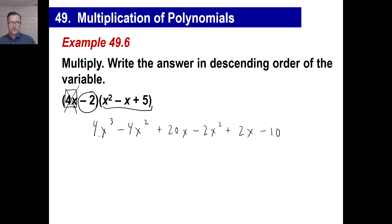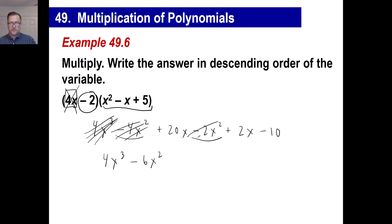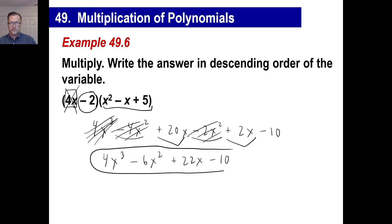Now if you look at this, there are no other cubed terms, so just put 4x to the third. There's a negative 4x squared and a negative 2x squared, giving us negative 6x squared. Then 20x plus 2x gives 22x, and then negative 10. Written in descending order of the variable: x to the third, x to the second, x to the first, and the constant. Anything to the 0 power is 1, so negative 10 times 1 stays negative 10.